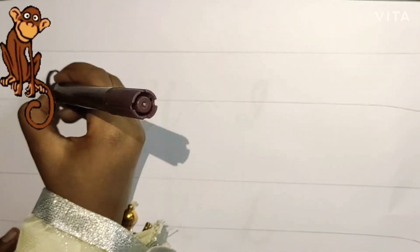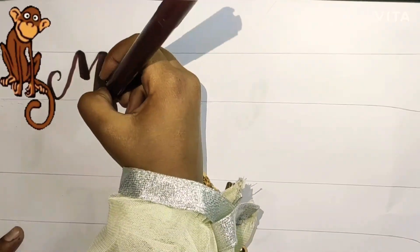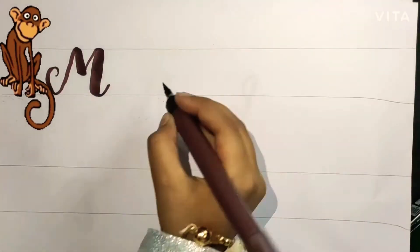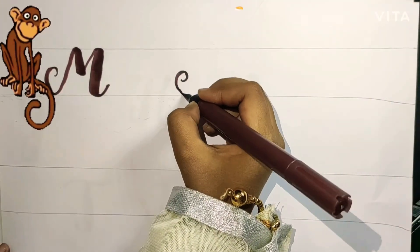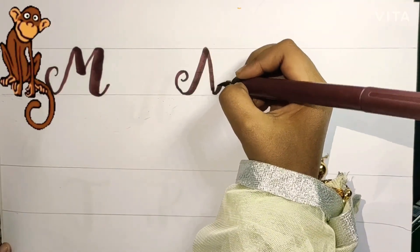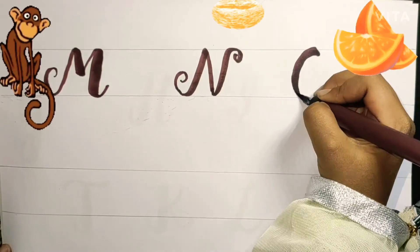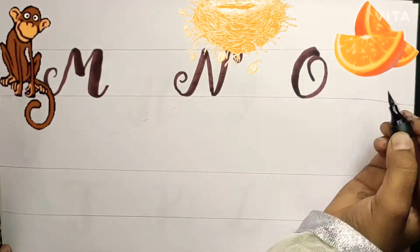M is for Monkey. N is for Nest. O is for Orange.